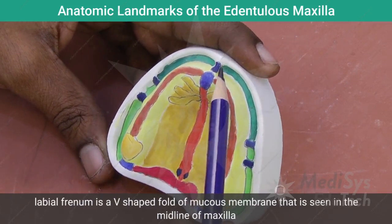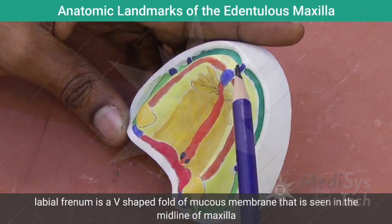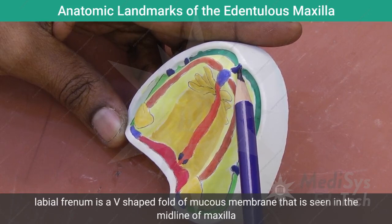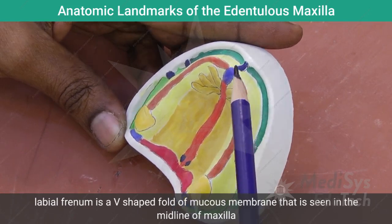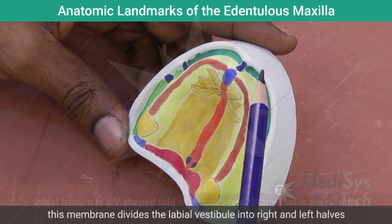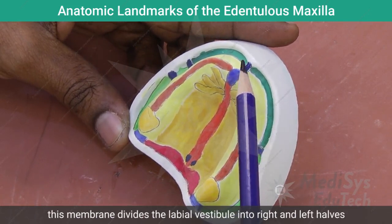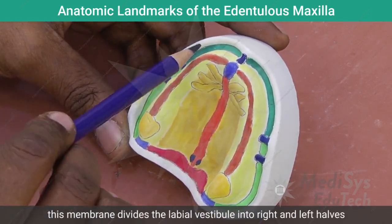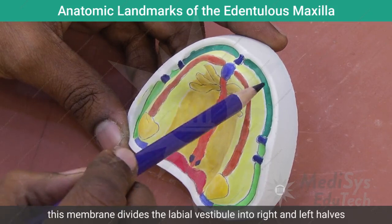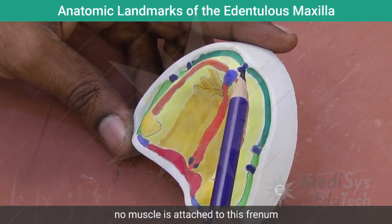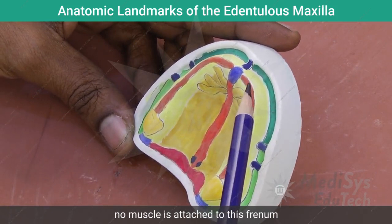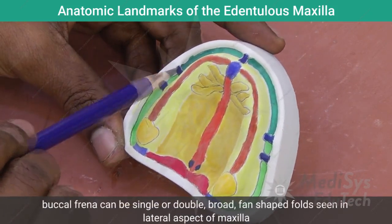The labial frenum is a V-shaped fold of mucous membrane seen in the midline of the maxilla. This fold of mucous membrane divides the labial vestibule into the right and left halves. No muscle attachment is seen in this frenum.